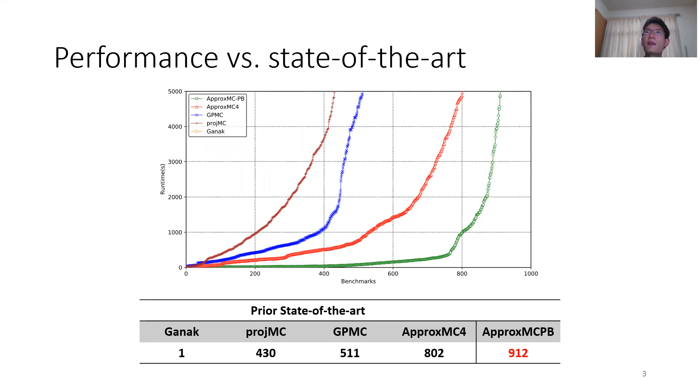As shown in the table, ApproxMCPB can solve more than 900 benchmarks, which increases the prior state-of-the-art by solving 110 more benchmarks. The cactus plot also shows ApproxMCPB achieved the best performance.